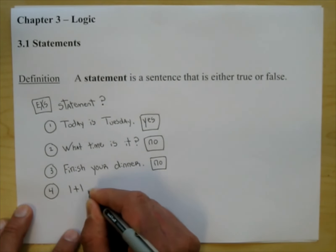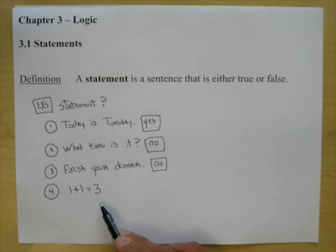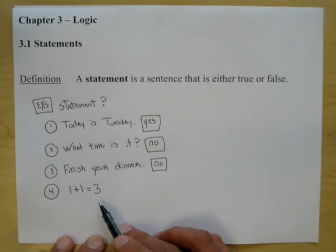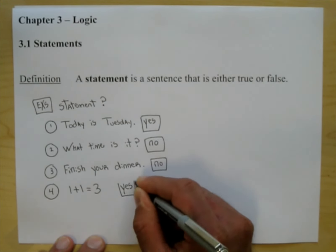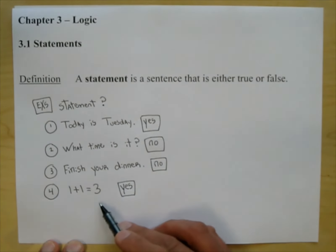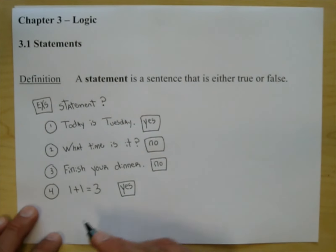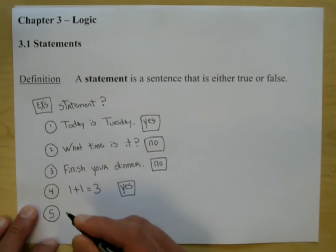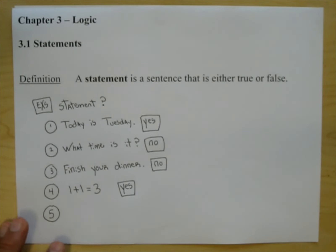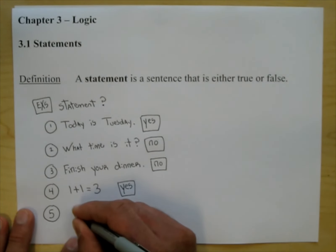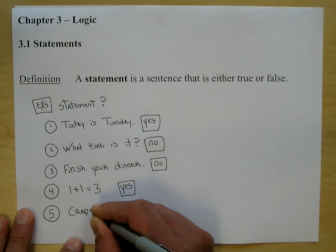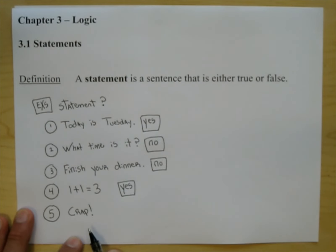Problem four: 'One plus one equals three.' You never thought your math teacher would write that. But is this a statement? Yes — this is a sentence that is false, so it is a statement. The answer is yes. I'm not saying one plus one equals three; I'm saying yes to the question 'is this a statement?' This statement happens to be false, and we'll get into truth values in section 3.2. Problem five: you just hit your thumb with a hammer — you say 'Crap!' Is that a statement? No, that's an exclamation.